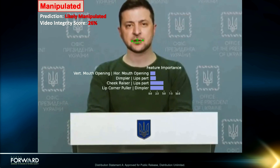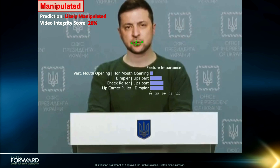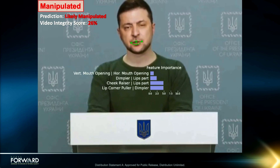On this manipulated video, the algorithm assigns a low integrity score, correctly predicting that the video was manipulated. Furthermore, the tool can highlight the facial action units where the behavior of the face is inconsistent with the real individual. In this case, there are four pairs of action units that are not consistent with the real President Zelensky.